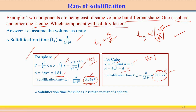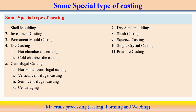Based on all this understanding, many special types of casting processes have been developed, including shell mold casting, investment casting, permanent mold casting, die casting (hot chamber and cold chamber), centrifugal casting (horizontal, vertical, semi-centrifugal), squeeze casting, single crystal casting, and pressure casting. These will be discussed in detail in the next module. This module provided an overview of the casting process design.